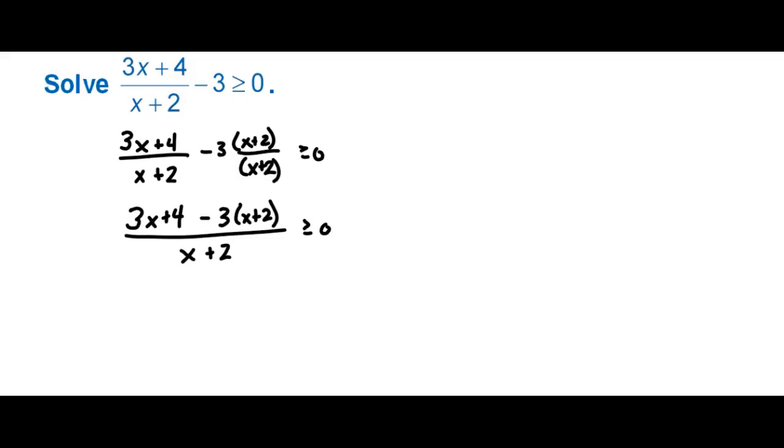So then let's go ahead and distribute that 3. We get minus 3x minus 6 over x plus 2, and when we simplify, these are going to cancel out, and then we have 4 minus 6, which is negative 2. So negative 2 over x plus 2 is greater than or equal to 0.